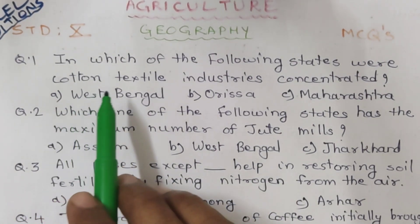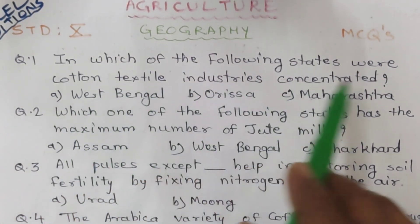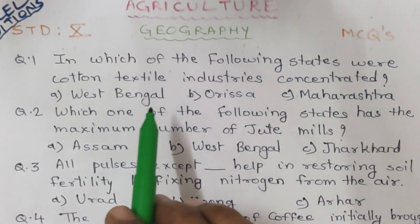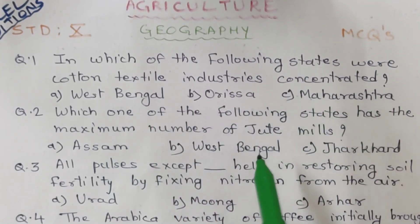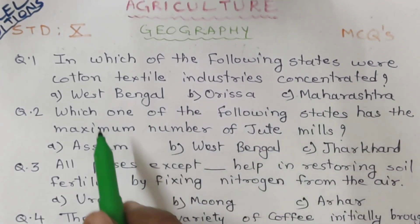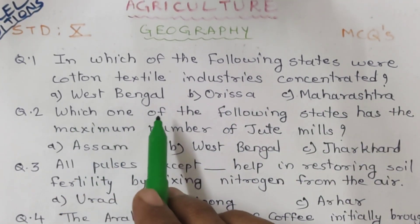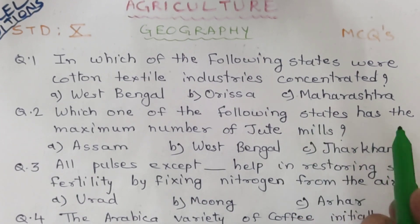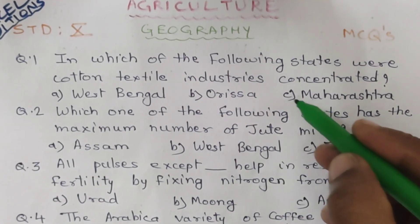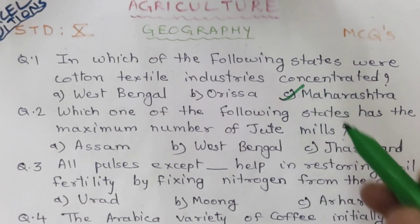Question 1. In which of the following states is the cotton textile industry concentrated? A. West Bengal. B. Orissa. C. Maharashtra. The correct answer is C. Maharashtra.